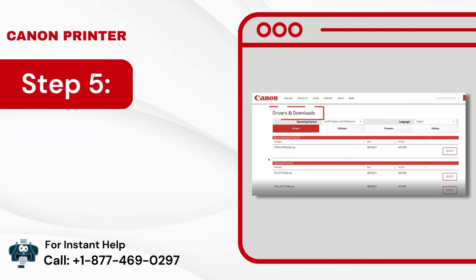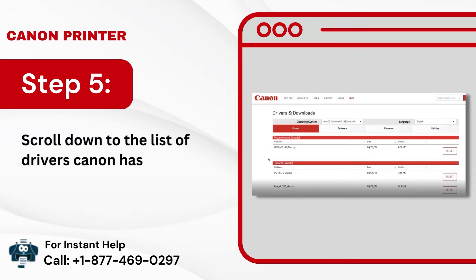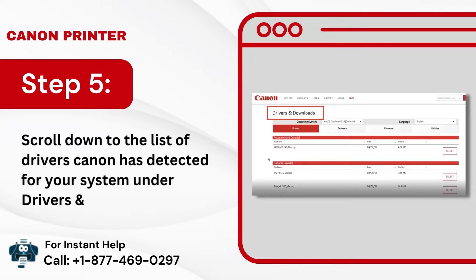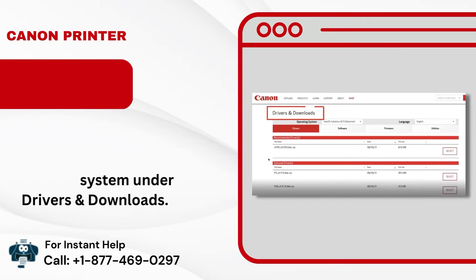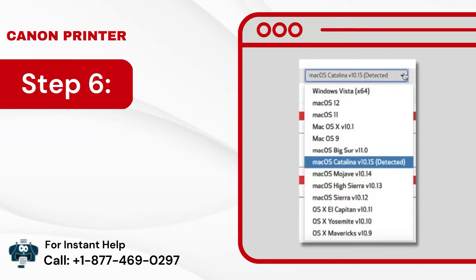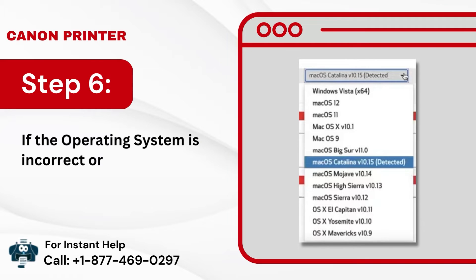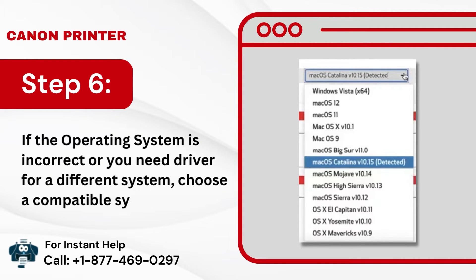Step 5: Scroll down to the list of drivers Canon has detected for your system under Drivers and Downloads. Step 6: If the operating system is incorrect or you need a driver for a different system, choose a compatible system from the drop-down list.